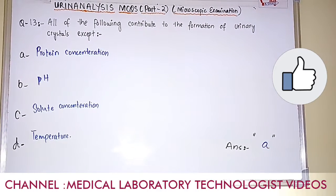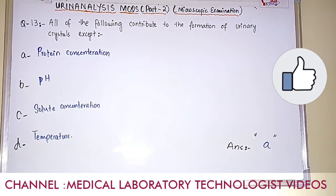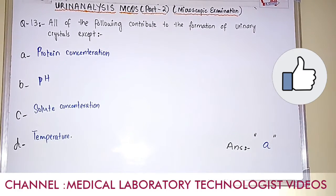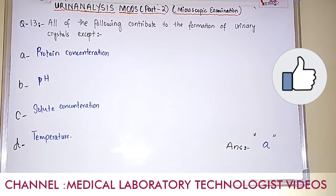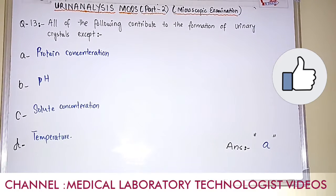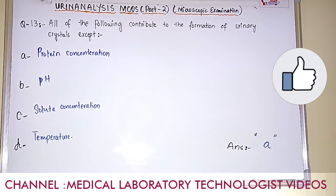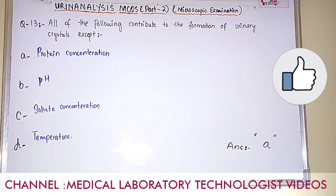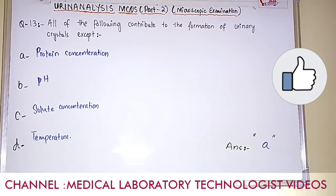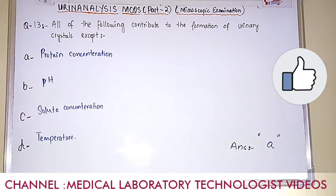Question number 13. All of the following contribute to the formation of urinary crystals except. Option A: protein concentration. Option B: pH. Option C: solute concentration. Option D: temperature. The answer is option A, protein concentration. Protein concentration does not contribute to the formation of urinary crystals, while pH, solute concentration, and temperature do contribute to crystal formation.